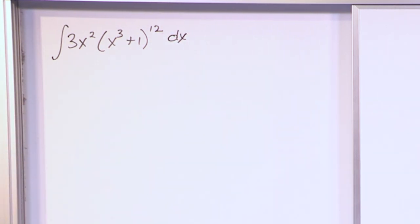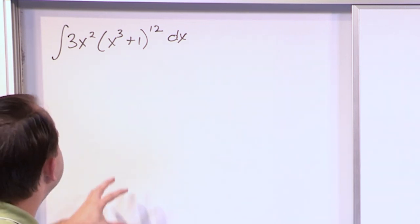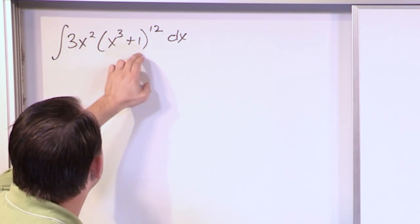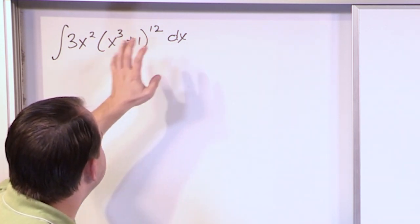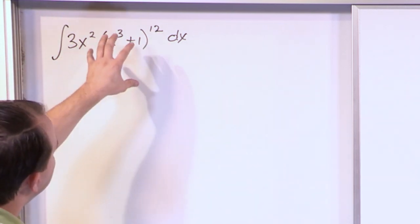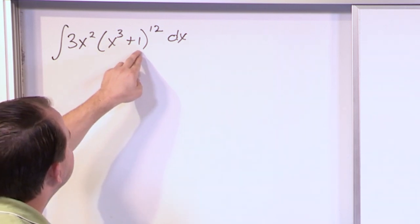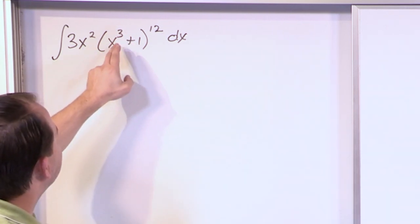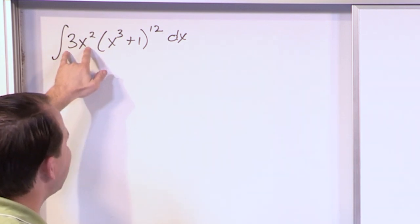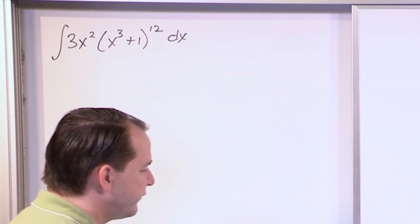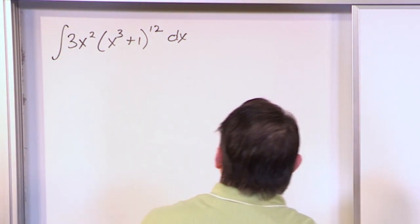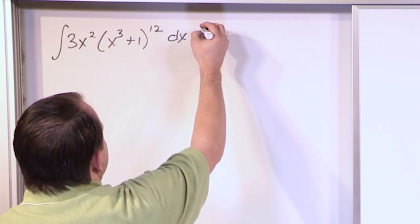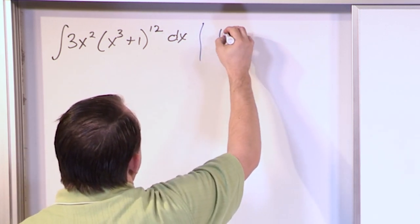We want to try to find a substitution. We look for things that are wrapped up and raised to powers or inside square roots. If we set this equal to u, then the derivative will be 3x squared — and that's exactly what we have out front. So you start to see these patterns after a while. That's probably the right substitution.